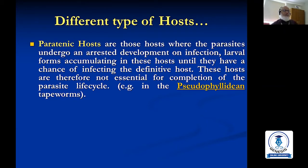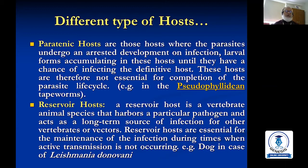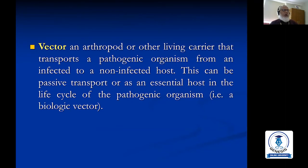An example of a paratonic host is Taenia solium. A reservoir host is a vertebrate animal species that harbors a particular pathogen and acts as a long-term source of infection for other vertebrate hosts. Reservoir hosts are essential for the maintenance of infection during times when active transmission is not occurring — for example, the dog in the case of Leishmania donovani.